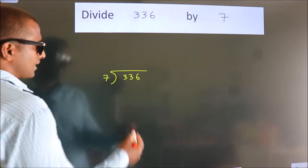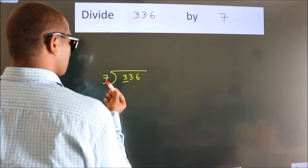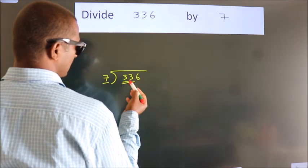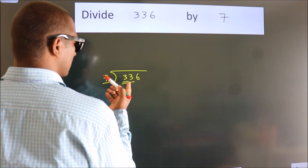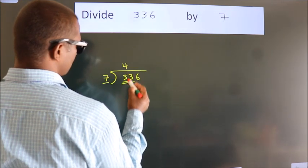Next. Here we have 3. Here 7. 3 smaller than 7. So we should take 2 numbers, 33. A number close to 33 in 7 table is 7 fours 28.